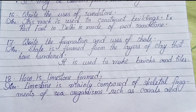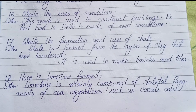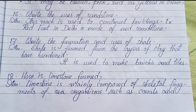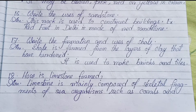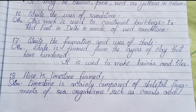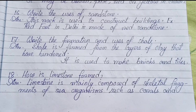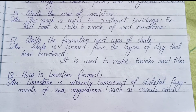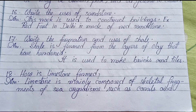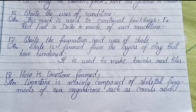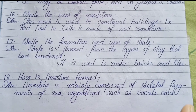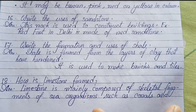Number seventeen: Formation and uses of shale — Shale is formed from layers of clay that have hardened. It is used to make bricks and tiles. Number eighteen: How is limestone formed? Limestone is mainly composed of skeletal fragments of sea organisms such as coral and sand.